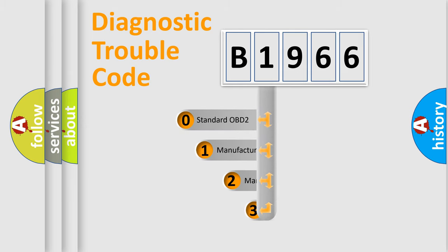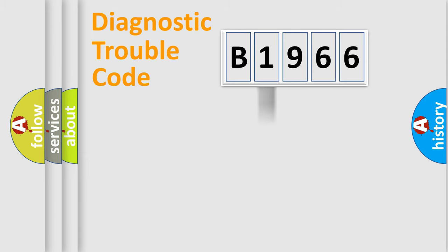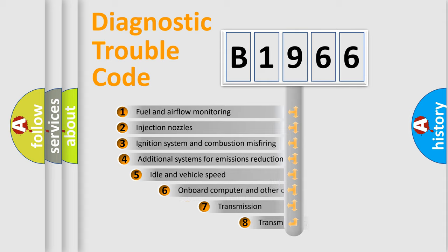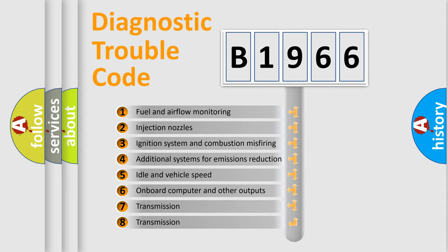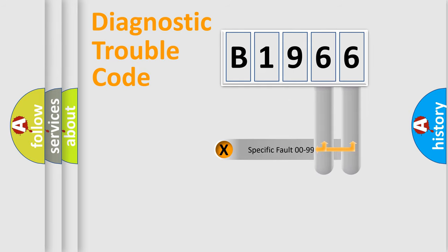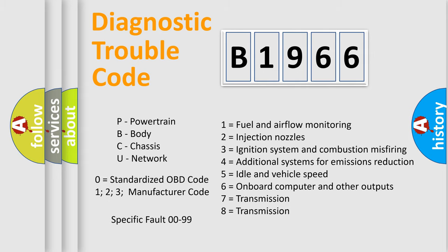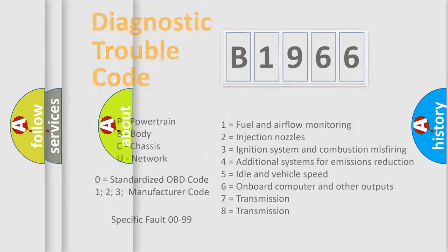This distribution is defined in the first character of the code. If the second character is expressed as zero, it is a standardized error. In the case of numbers 1, 2, or 3, it is a more manufacturer-specific expression of the car error. The third character specifies a subset of errors. The distribution shown is valid only for the standardized DTC code, and only if the second character is expressed by the number zero.